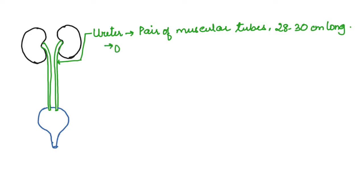The ureters here I am drawing in green, and the urinary bladder and urethra in blue. Ureters are a pair of muscular tubes which extend from the kidney to the urinary bladder and are about 28 to 30 centimeters long.